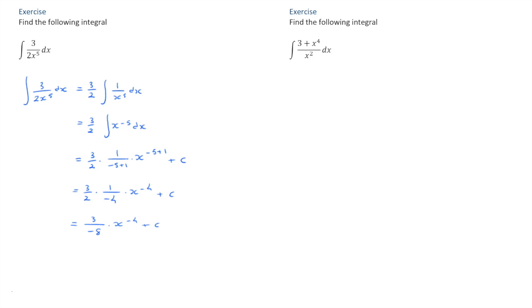Now, 3 over negative 8 is just negative 3 eighths, so that would be negative 3 eighths times x to the power of negative 4. We can write x to the power of negative 4 as 1 over x to the power of 4 plus c. Finally, we can state that this equals negative 3 over 8x to the power of 4 plus c.